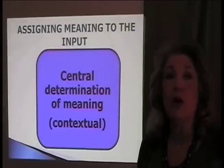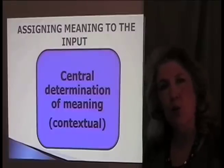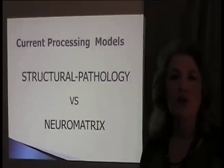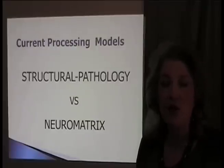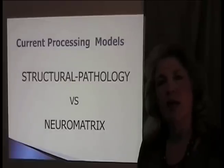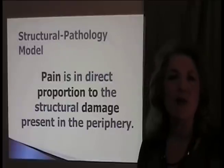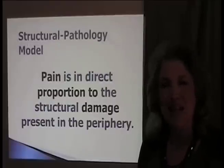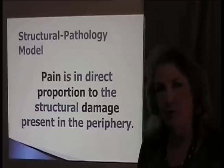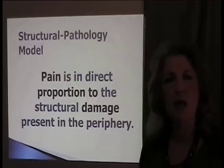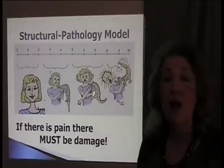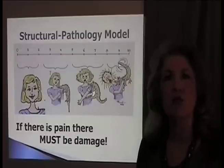Now we must look at how the brain determines what incoming information means. In school you may have learned the structural pathology model, in which pain is in direct proportion to structural damage. If I have 5 out of 10 pain, I have 5 out of 10 structural damage — a proportionate damage-to-pain ratio. That means if I have pain, something is definitely being damaged, so it's a time to be concerned.